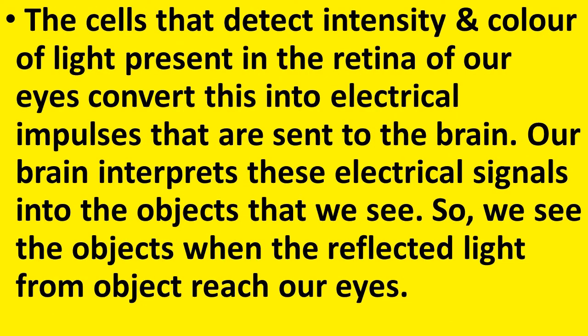The cells that detect intensity and color of light, present in the retina of our eyes, convert this into electrical impulses that are sent to the brain. Our brain interprets these electrical signals into the objects that we see. So we see the objects when the reflected light from the objects reaches our eyes.